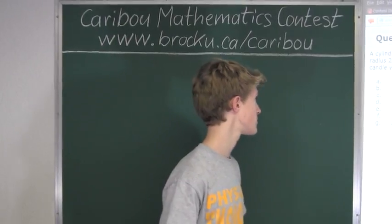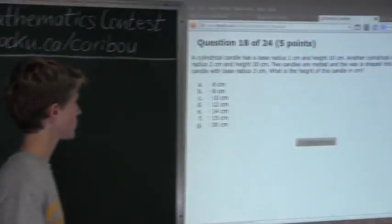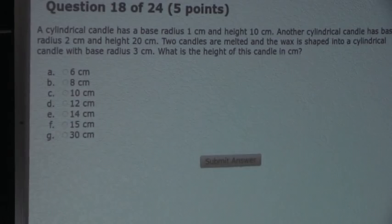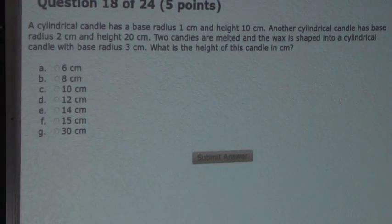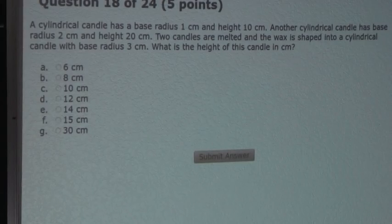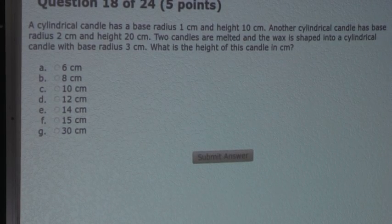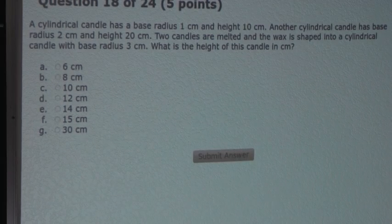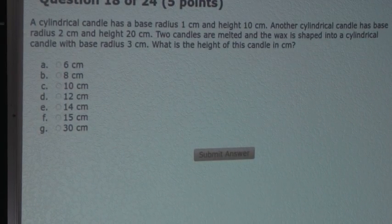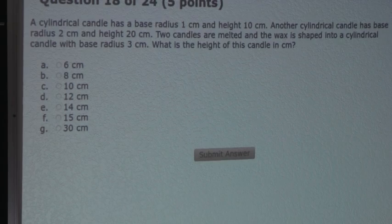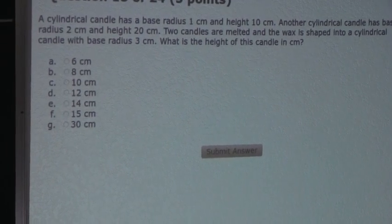So the question is: a cylindrical candle has a base radius 1 cm and height 10 cm. Another cylindrical candle has base radius 2 cm and height 20 cm. Two candles are melted and the wax is shaped into a cylindrical candle with base radius 3 cm. What is the height of this candle in cm?